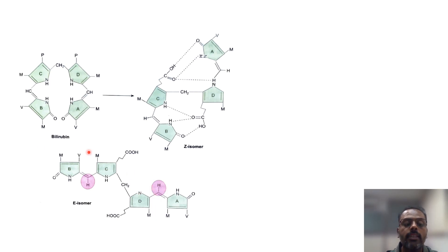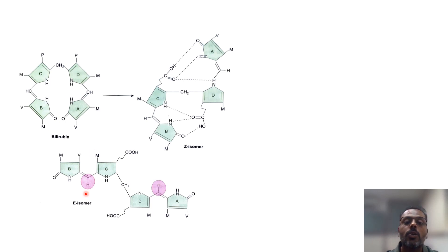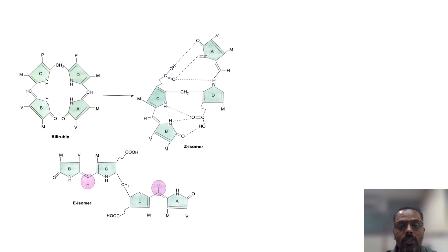This E-isomer is also known as lumirubin. So this is the rationale behind giving phototherapy in neonatal jaundice or physiological jaundice. Thank you.